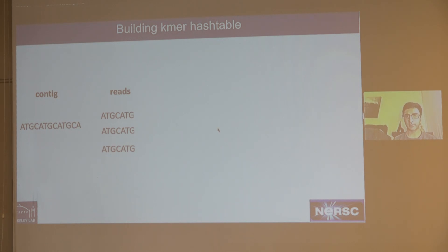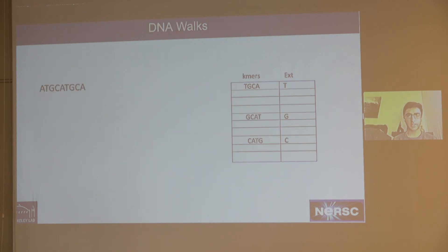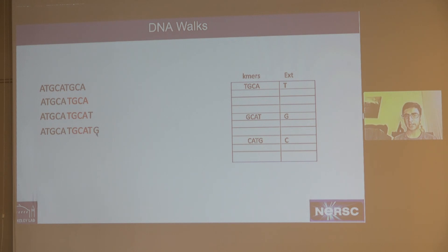The algorithm has two steps. First, we build a de Bruijn graph using k-mer hash tables: we break reads into k-mers, use the k-mer as the key, and the extension nucleotide as the value. For example, k-mer ATGC has extension A, so ATGC is the key and A is the value. Once the hash table is complete, we perform the de Bruijn graph walk: we take a slice from the end of the contig — say TGC — look it up in the k-mer hash table, find the extension, and append it to the contig. We repeat this until we get an acceptable walk. If the walk fails, we go back, rebuild the hash table with a different k-mer size, and repeat.